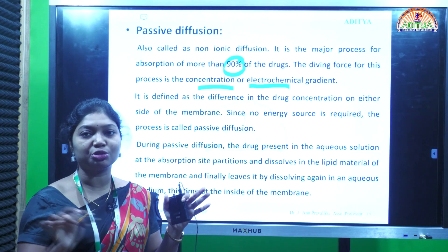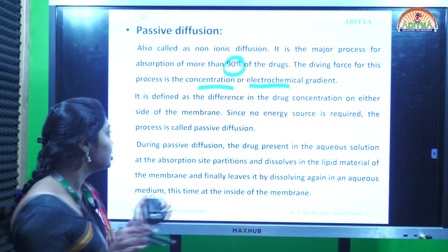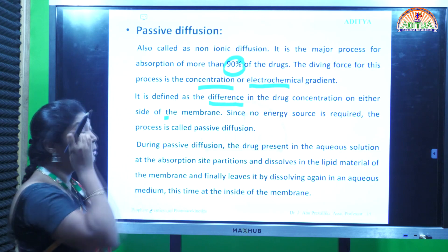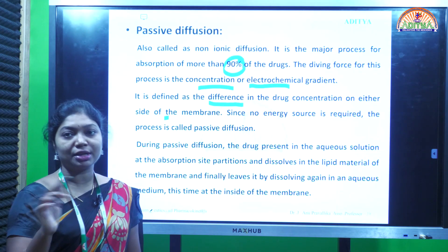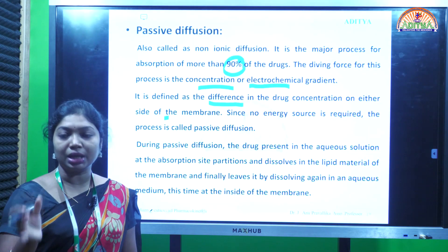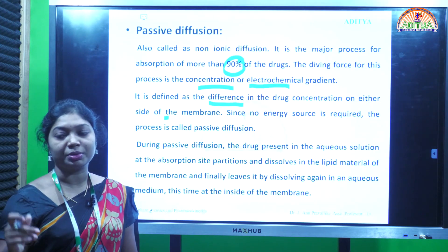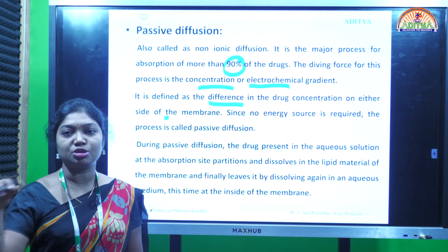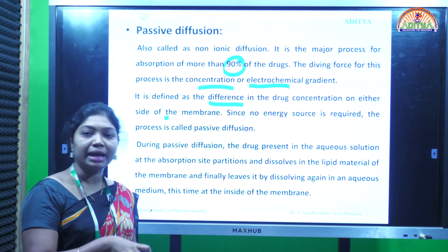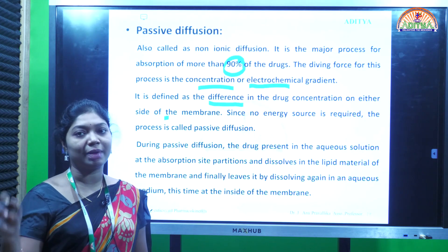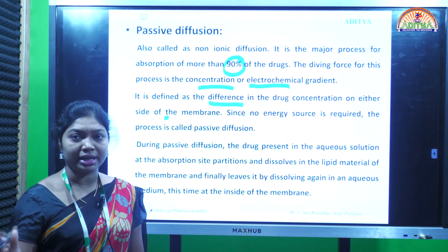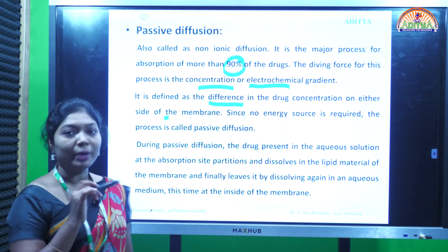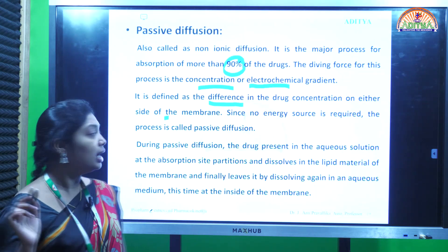The drug will keep passing through the membrane until equilibrium is attained. When the drug concentration inside gets swept away and distributed to all the organs, the remaining portion of the drug crosses the biological membrane again until equilibrium is attained. After that, it distributes to all the organs again. In this way, complete drug absorption occurs.